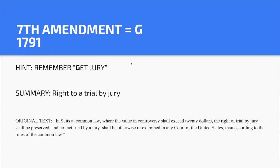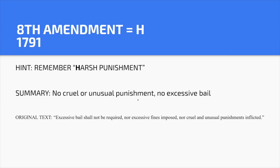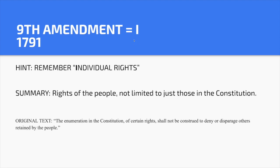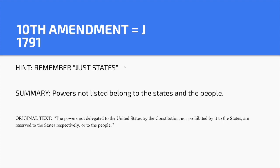Sixth Amendment — F. Hint: 'Fast trial.' You have the right to a speedy trial and a lawyer, even if you can't afford one. Seventh Amendment — G. Hint: 'Get jury.' Right to a trial by jury. When all of you turn 18, you'll be eligible for jury duty. Eighth Amendment — H. Hint: 'Harsh punishment.' No cruel or unusual punishment and no excessive bail. Ninth Amendment — I. Hint: 'Individual rights.' You have rights as a person in this country, and those rights aren't limited to those listed in the Constitution. Tenth Amendment — J. Hint: 'Just states.' Powers not listed in the Constitution belong to the states and the people — this is a federalism amendment about when the federal government versus a state makes decisions.